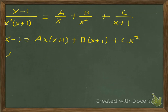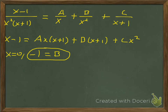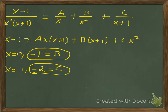We pick values of x to make terms drop out. If x equals 0, the A and C terms vanish: 0−1 = −1, and the right side becomes B times (0+1) = B. So B equals −1. Next, letting x equal −1 makes the A and B terms drop out: −1−1 = −2, and the right side is C times (−1)² = C. So C equals −2.